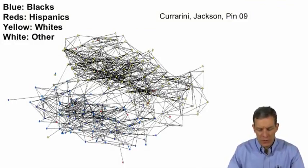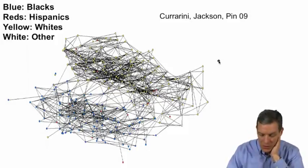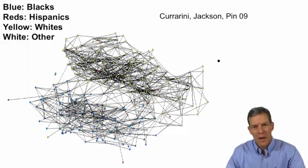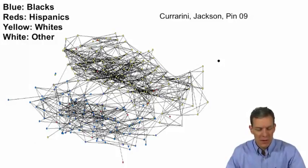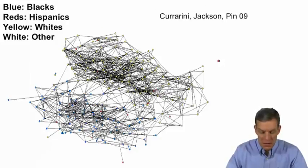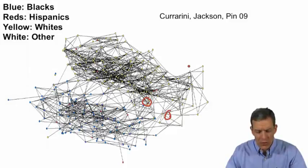Here's a picture from a high school in the AddHealth data set, from work done with Sergio Cuarini and Paulo Pin. We're looking at a given high school where nodes are colored by their self-reported ethnicity. The blue nodes are blacks, there are a few red nodes which are Hispanics, and the yellow nodes are whites.